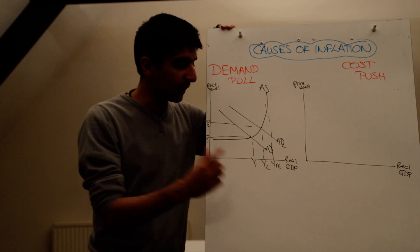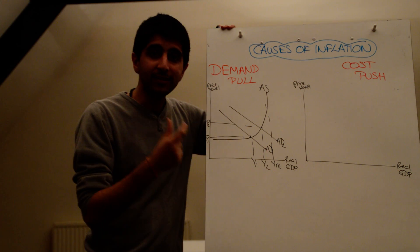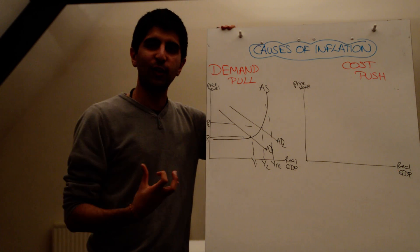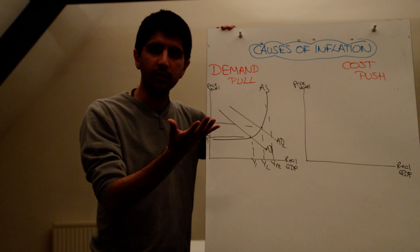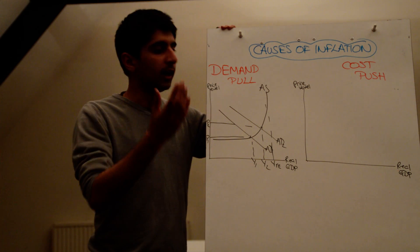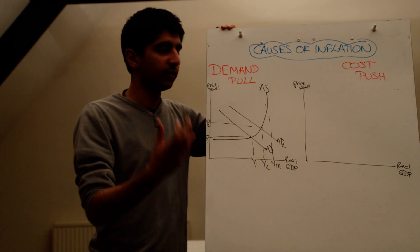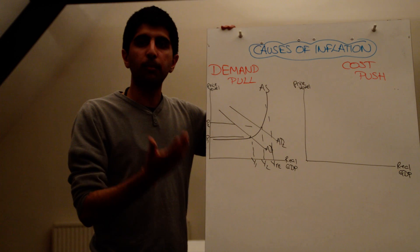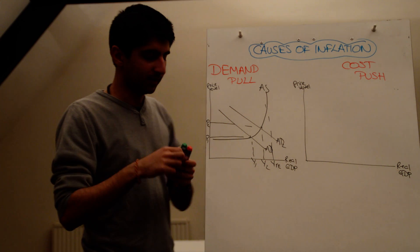As we move closer to the full employment level of output in the economy, there is more pressure put on the existing factors of production in the economy. We're exhausting more and more spare capacity in the economy. So the pressure on labour, the pressure on capital, the pressure on land all increases. And when there is more pressure put on these factors of production, the price of them increases. Workers suddenly want higher wages. The price of capital increases because it becomes scarcer. The price of land increases because it becomes scarcer. So overall, that puts upward pressure on prices in the economy. That's why there is demand pull inflationary pressure from P1 to P2.